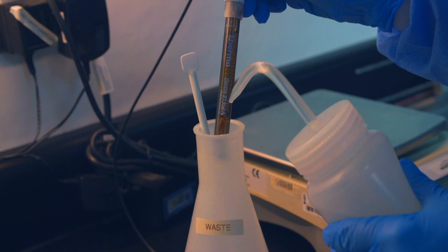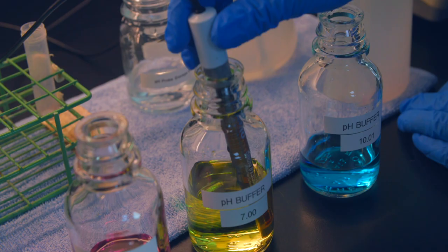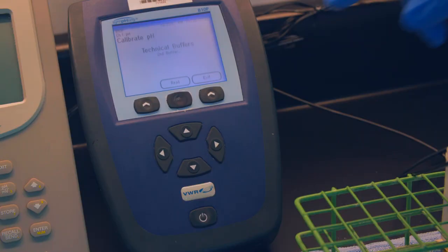Place the probe into the pH 7.00 buffer and gently swirl to remove any bubbles from the tip of the probe. Press read to begin the next calibration. You will know the value has stabilized when the pH indicator stops flashing and you hear the beep.